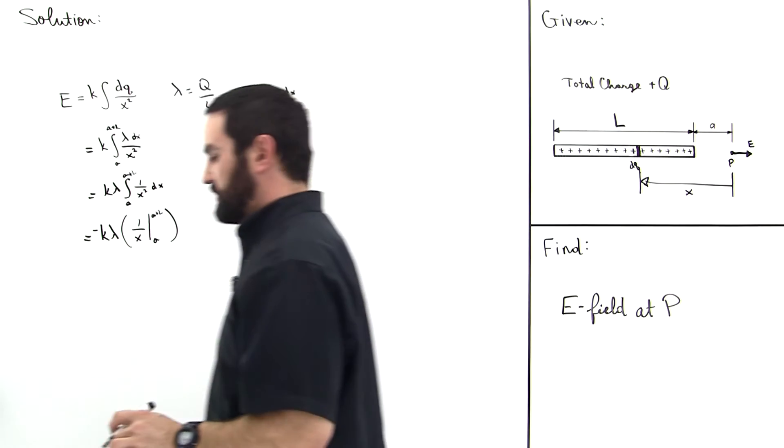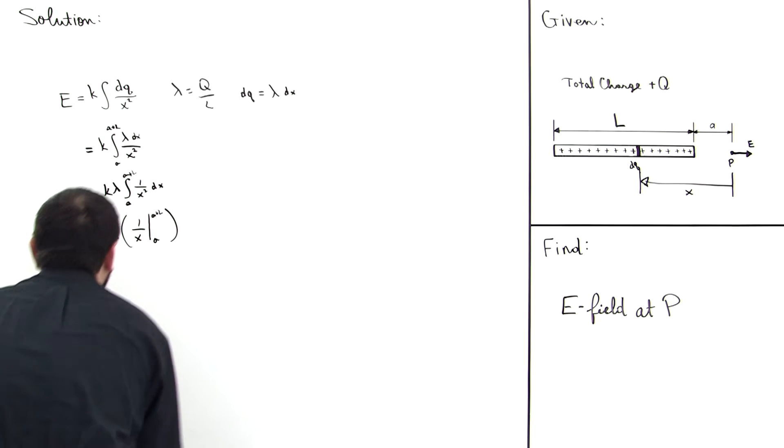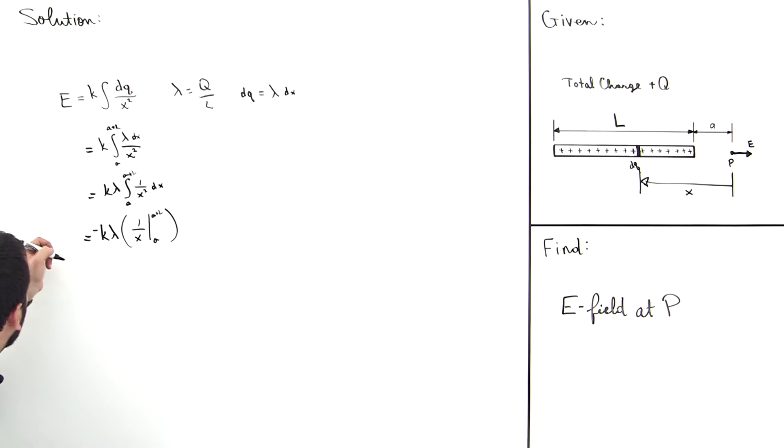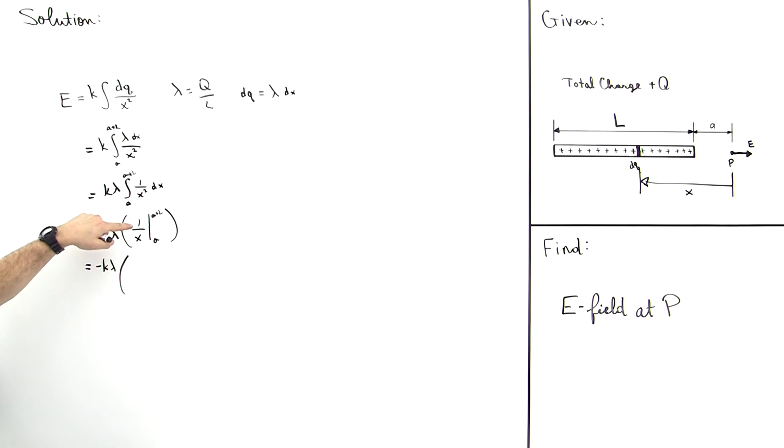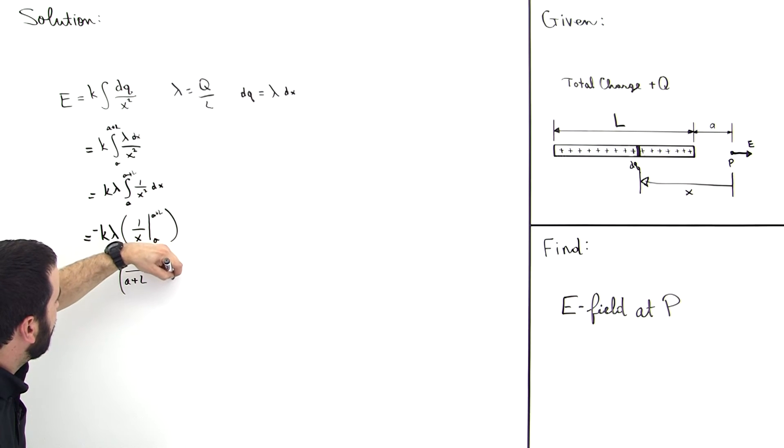This is equal to negative K Lambda times 1 over X evaluated at A plus L minus 1 over X evaluated at A. So we have 1 over A plus L minus 1 over A, like this.